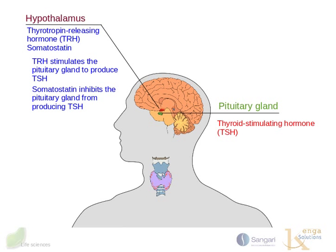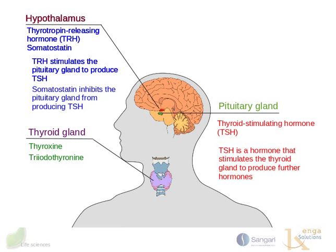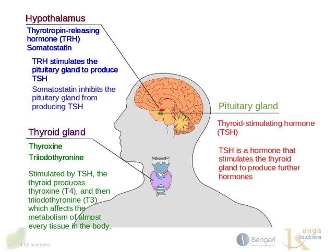Next, let us look at the pituitary gland. TSH, thyroid-stimulating hormone, is a hormone that stimulates the thyroid gland to produce further hormones. Stimulated by TSH, the thyroid produces thyroxine, T4, and then triiodothyronine, T3, which affects the metabolism of almost every tissue in the body.